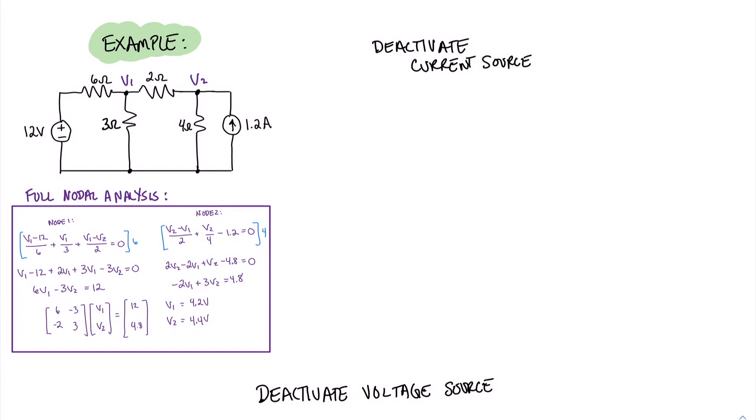As the first step of performing superposition, let's deactivate the current source here on the right. And again, to deactivate a current source, we open the current source. And for the sake of it, we'll go ahead and redraw the circuit without that current source. When I look at this circuit and I think about doing the analysis on this circuit, I can see that actually I only really need to account for the V1 node and do a nodal analysis at that node.